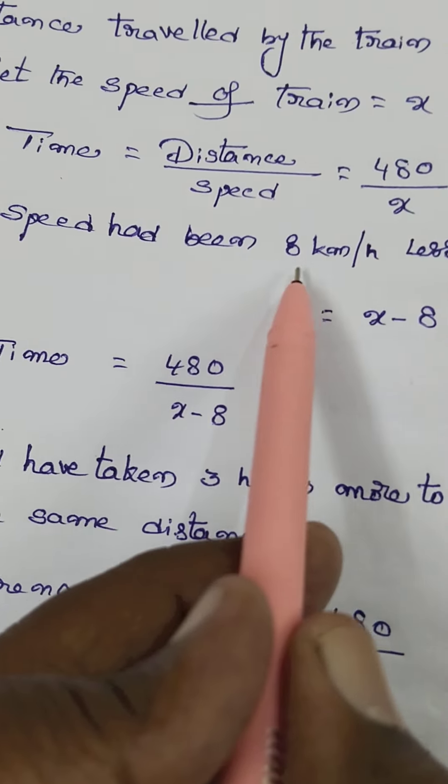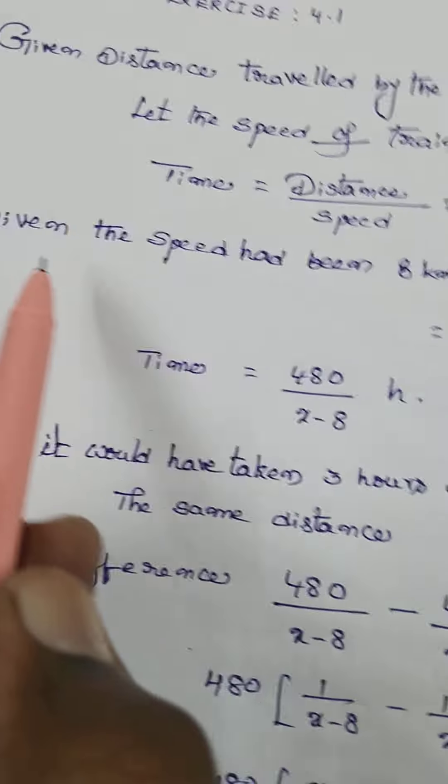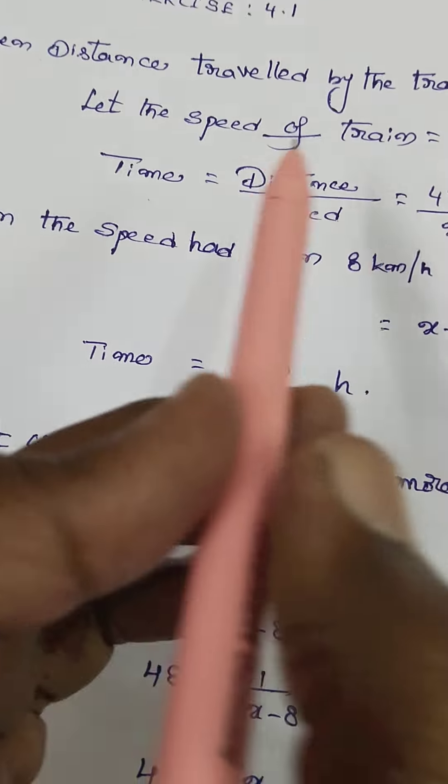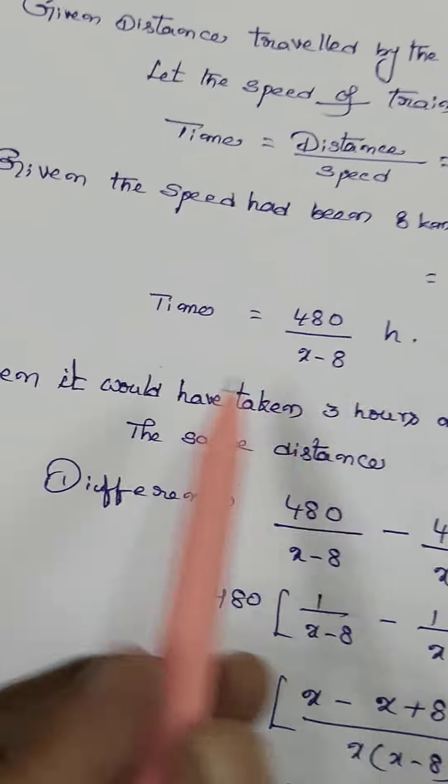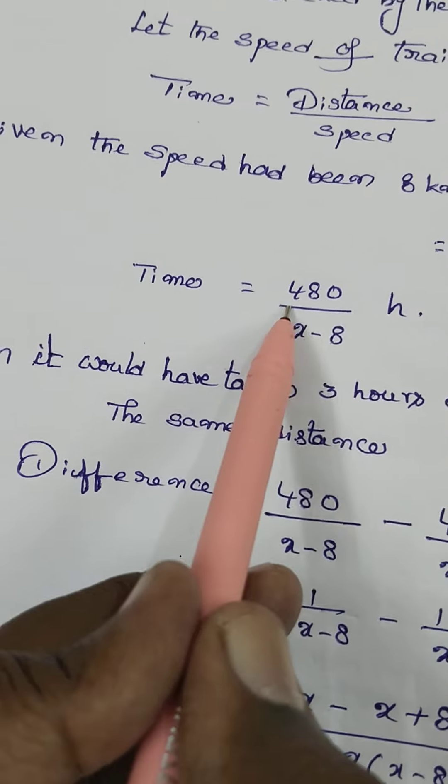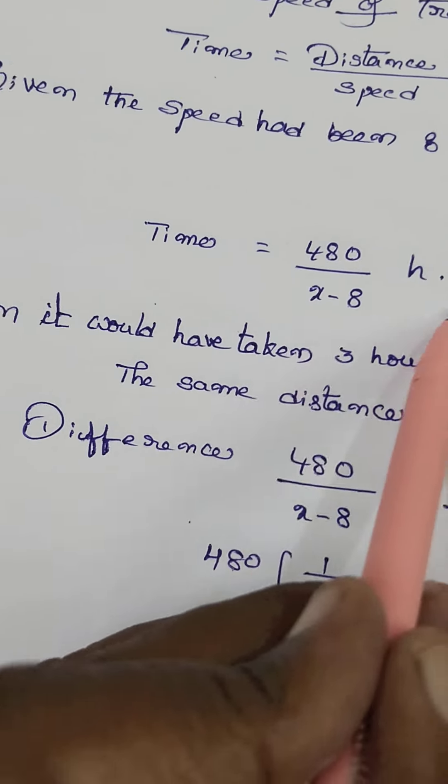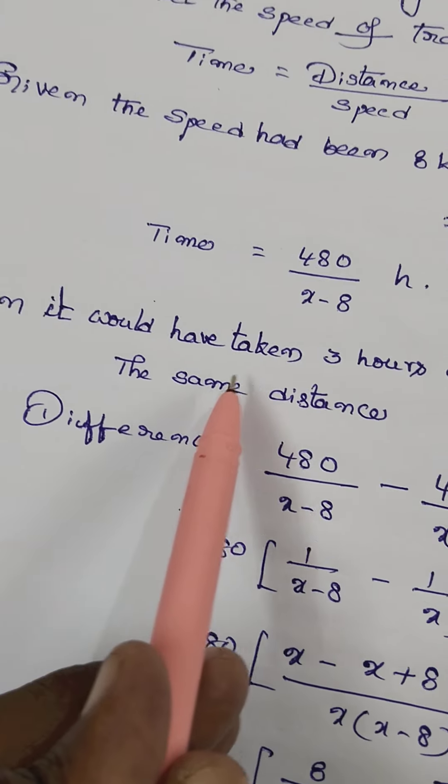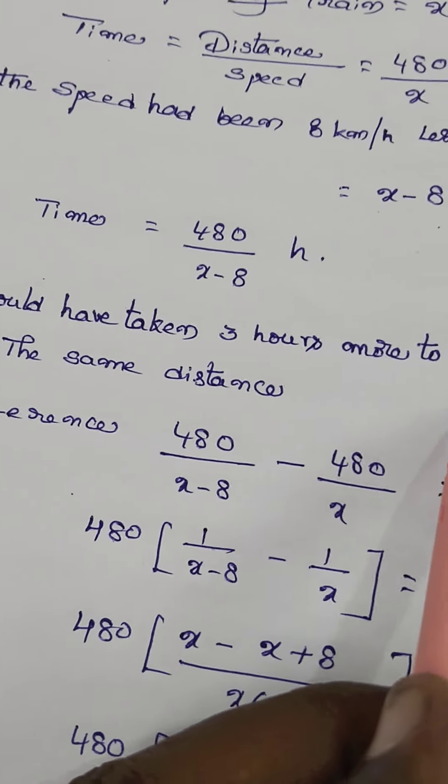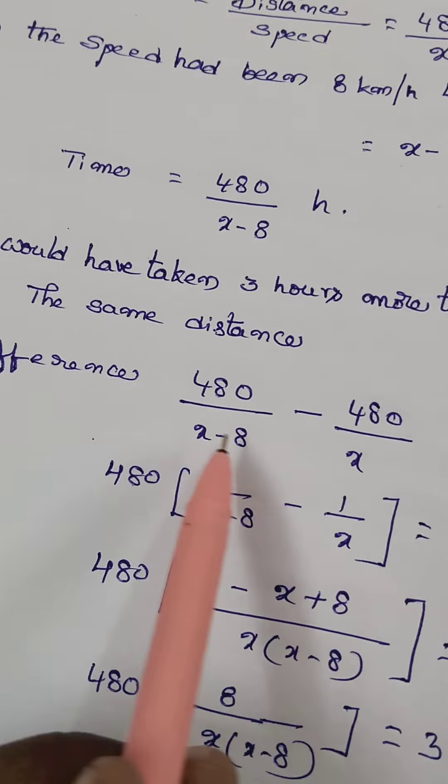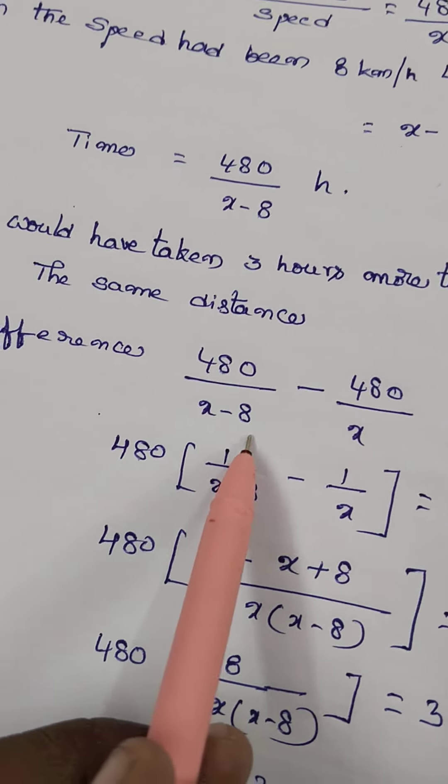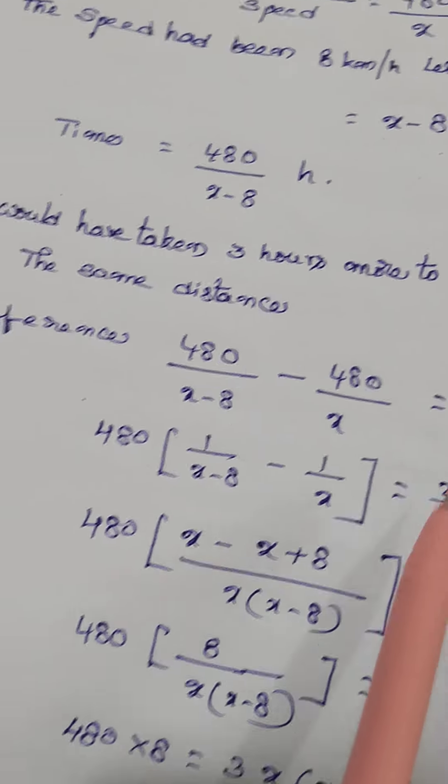Given the speed of the train is 8 kilometers per hour less, and it would have taken 3 hours more to cover the same distance. So the difference: 480 divided by (x minus 8) minus 480 divided by x equals 3.